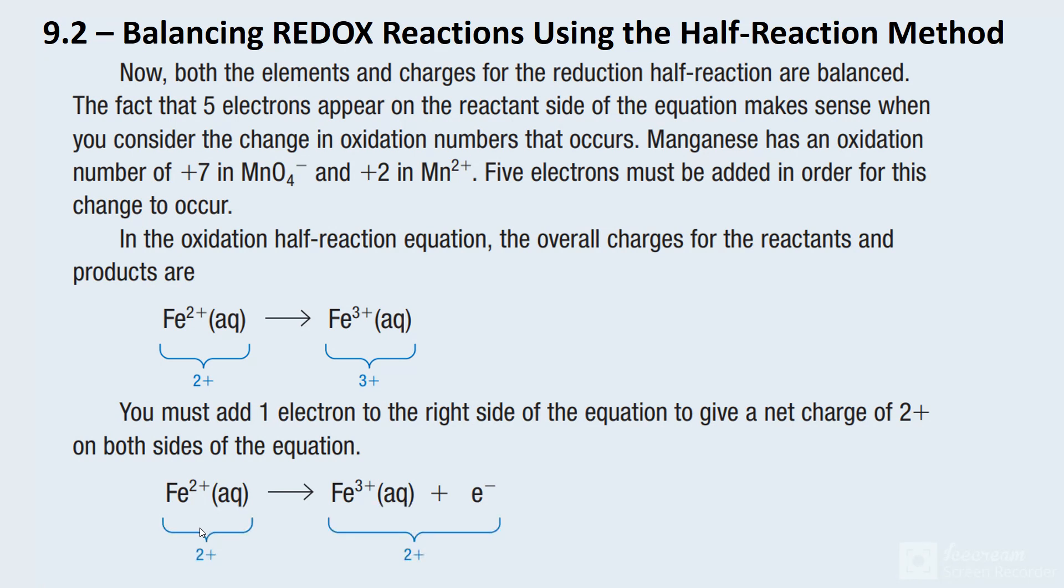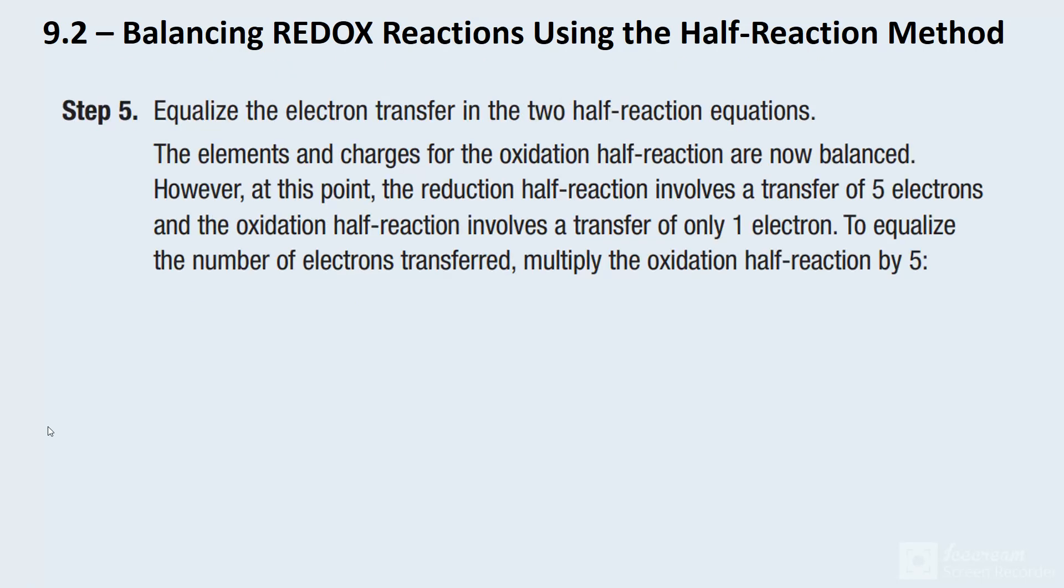So the realization that one of our equations needed five electrons and one needed one means we're going to be doing some multiplying. And that's what we're going to do in the next step here. So again, our first equation needed five electrons and this one needed one, which means we're going to be multiplying everything here in the next step by five so that we equalize the electrons on both sides of our equation. So that's what's happened right here. We've added a five, a five, and a five.